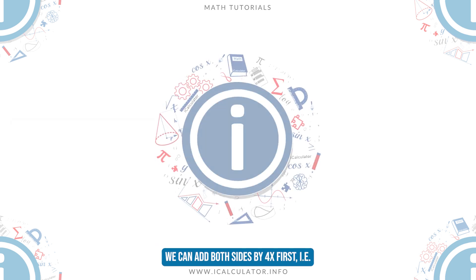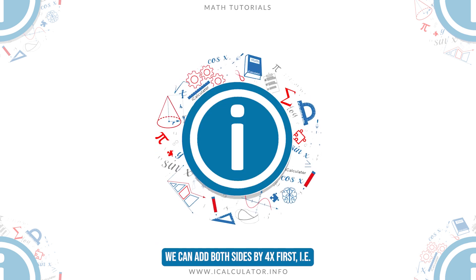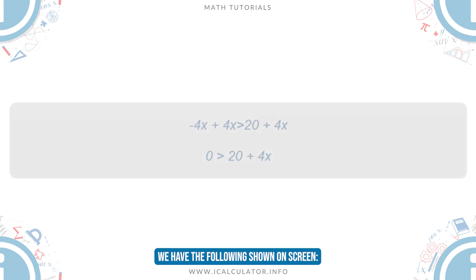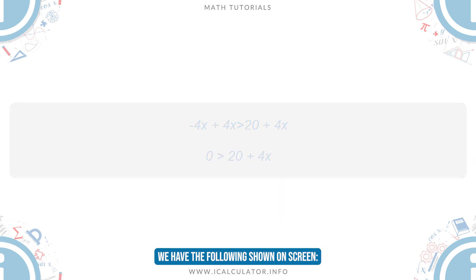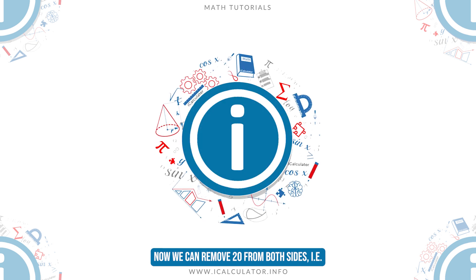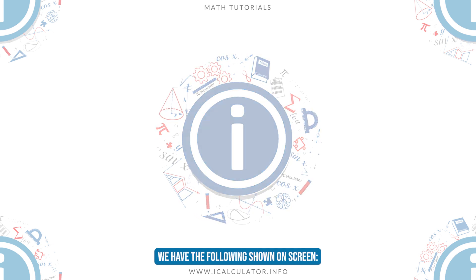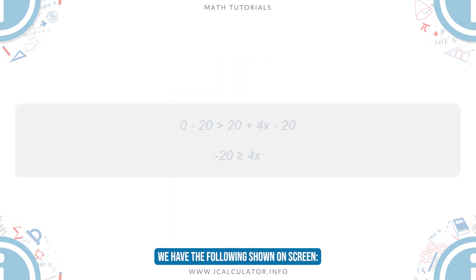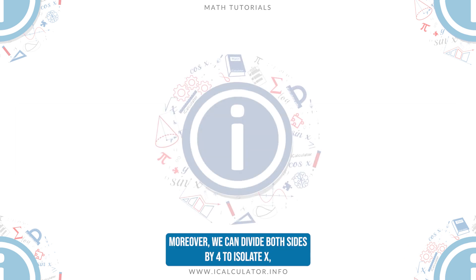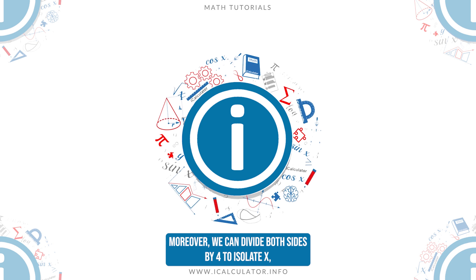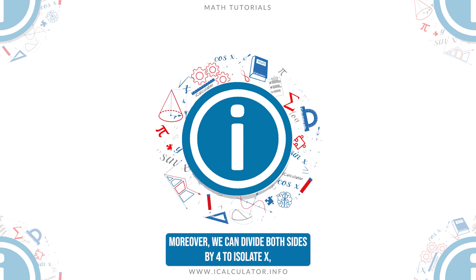We can add 4x to both sides first, as shown on screen. Now, we can remove 20 from both sides, as shown on screen. Moreover, we can divide both sides by 4 to isolate x, as shown on screen.